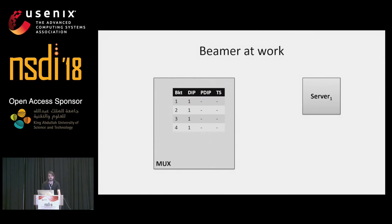Let's take a look at how Beamer works. For each bucket, the muxes know which server is responsible for it. They also know what the previous server was handling the bucket, along with the timestamp of the reassignment. In this case, we have a fresh deployment with only one server, so all four buckets are assigned to it.